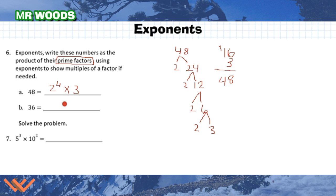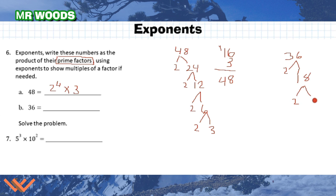For 36: 2 times 18, then 2 goes into 18 nine times, and 9 is 3 times 3. So this is 2 squared times 3 squared. Check: 4 times 9 is 36. Now solve 5 cubed times 10 squared. We can't just multiply across and add the exponents because the bases are different. So I'll compute 5 times 5 times 5, and 10 squared is 100. 5 times 5 is 25, times 5 is 125 — and 125 times 100 equals 12,500.